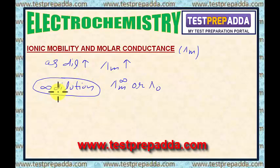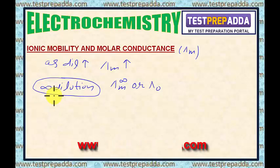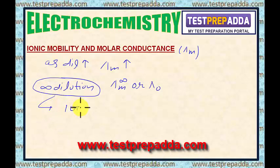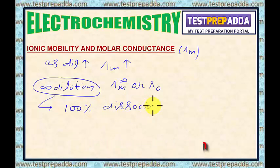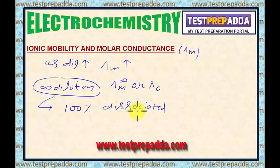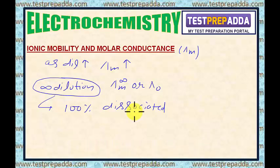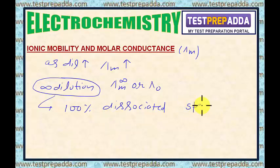At infinite dilution, all electrolytes are almost 100% dissociated. But their molar conductance values differ largely from one another. To explain that, we take the help of speed of ions.